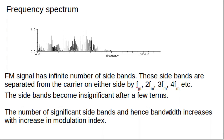Even though FM has infinite sidebands, not all are equally significant. Moving to higher frequency sidebands, their power and amplitude become very small. We only count significant sidebands when analyzing FM. The number of significant sidebands — and hence bandwidth — increases with increasing modulation index. As modulation index increases, more significant sidebands appear, increasing the bandwidth of the FM signal.